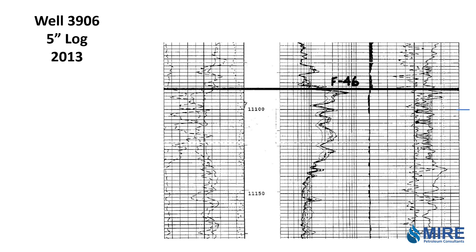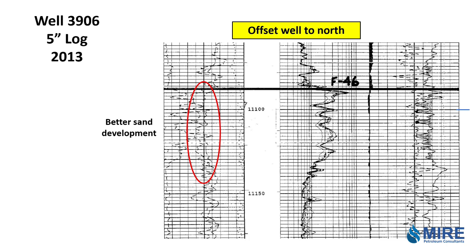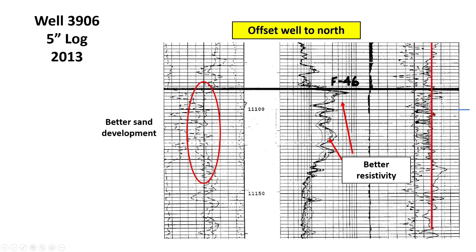Let's look at the well to the north — maybe it can tell us about how thick the reservoir is in the general area. We estimated 16 feet in the other well. The offset well to the north appears to have better sand development; you can see some contrast on the gamma ray, and the resistivity seems a little better — it looks like gas pay. If we put the porosity cutoff in red and estimate the pay, maybe in this 10-foot interval you have 5 feet, then 6, then 5. This looks like maybe about 22 feet of pay, so it's a little thicker. It gives us comfort that the reservoir is about 16 to 20 feet thick in the study area.